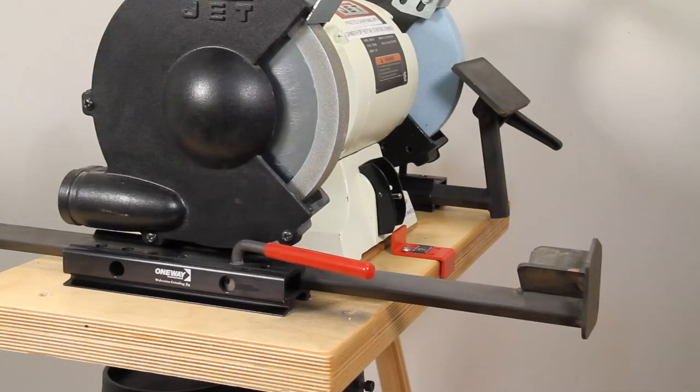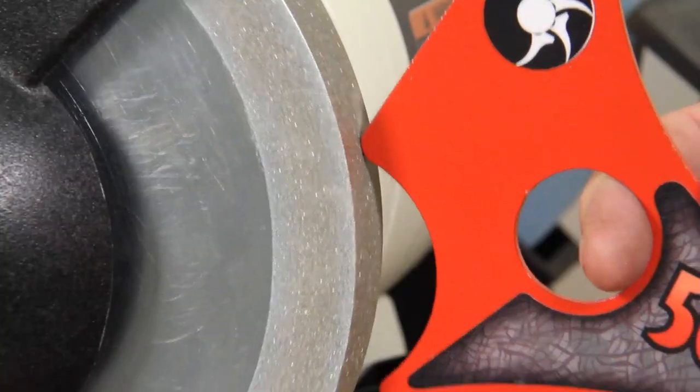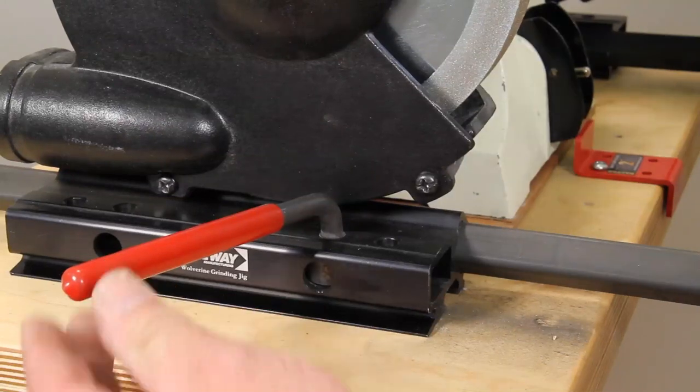Position the tool support slide using the 50-degree Raptor setup tool. Tighten and you're ready to go.